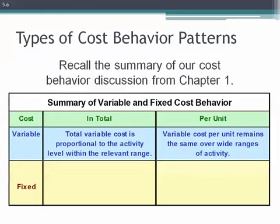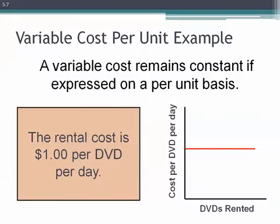However, the cost per DVD per day at Redbox remains constant regardless of the number of movies that we rent. Summarizing: in total, the variable cost will increase with the level of activity, but on a per-unit basis, our variable cost remains constant. Referring back to our Redbox DVD rental example — regardless of the number of DVDs that we rent, the cost per DVD per day remains constant at $1, or maybe $1.25 now.